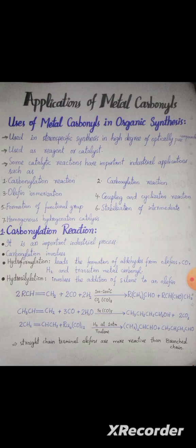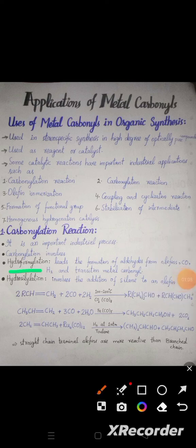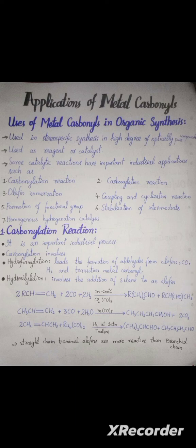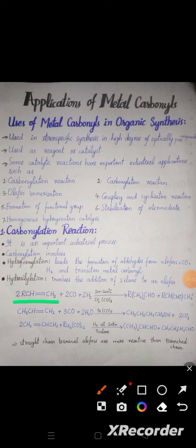Applications include formation of functional groups, stabilization of intermediates, and homogeneous hydrogenation catalysis. The first is carbonylation reaction, which is an important industrial process. Carbonylation involves hydroformylation and hydrosilylation. Hydroformylation involves formation of aldehyde from olefin, carbon monoxide, hydrogen, and transition metal carbonyls. For example, alkyne (2RCH₂) reacts with carbon monoxide and hydrogen at 100–200°C to give the corresponding aldehyde products.